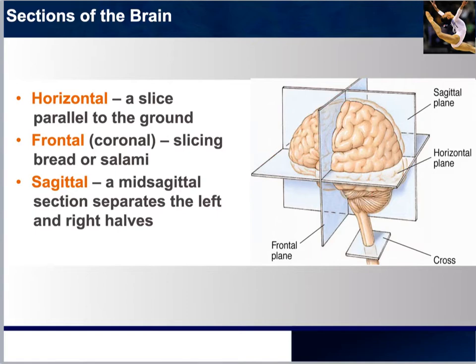The third plane is the sagittal, where you would cut exactly in half for a mid-sagittal section. However, you could also do sagittal cuts on the rest, continuing to slice from left to right. It is through planes like these that posthumous analyses are done.